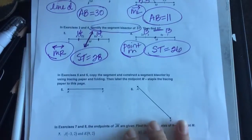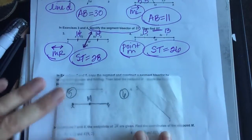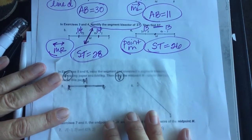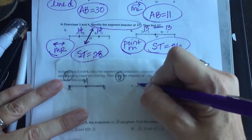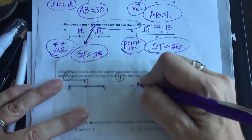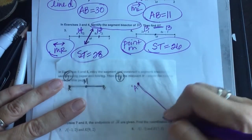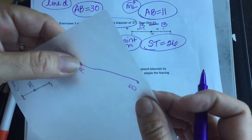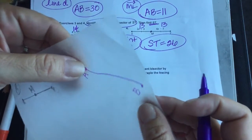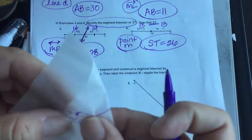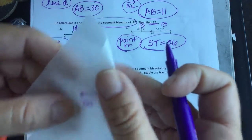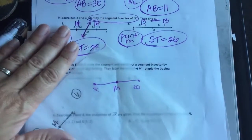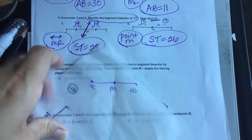Yesterday in class we went through the patty paper activity — I took a look at your patty papers. You had to trace your object. I did it for number five and already folded it for number six. Once you've traced it, you fold it — I'm lining up A and B, making a little fold. That fold splits the segment at its midpoint. Label the midpoint and staple those to your paper.